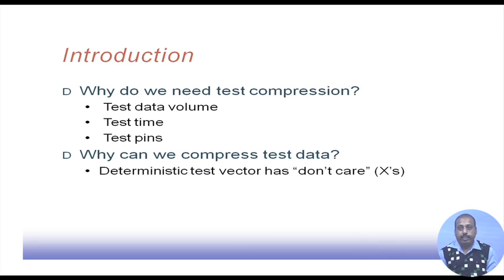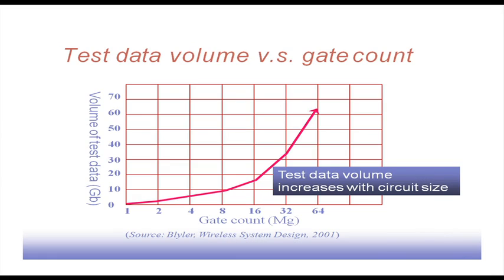Why can we compress test data? It is because deterministic test vectors have don't-cares. The ATPG algorithms generate test patterns where bits not required to be set for particular faults to be tested are left as don't-cares. These don't-cares can be exploited so that multiple patterns may match a single representative one, allowing us to achieve test compression.